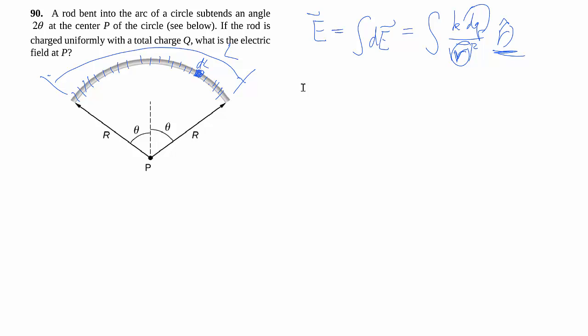So an arc length you can just think of as a part of a circumference. We call that distance s. And then if we call that phi, because theta is used up already, given a certain radius.